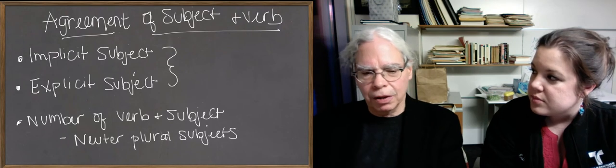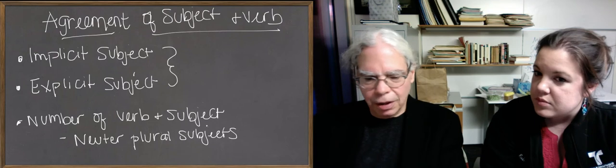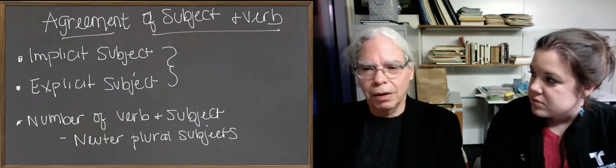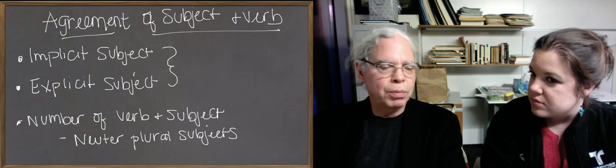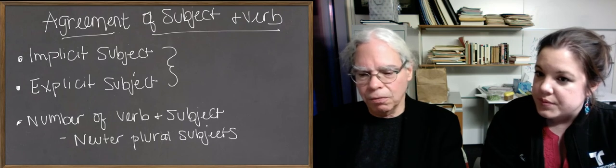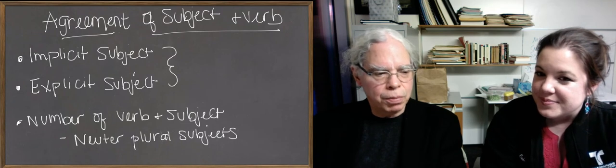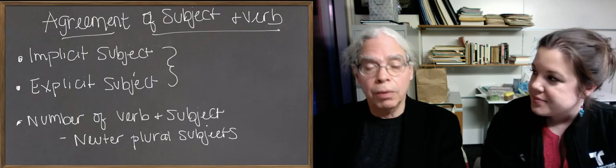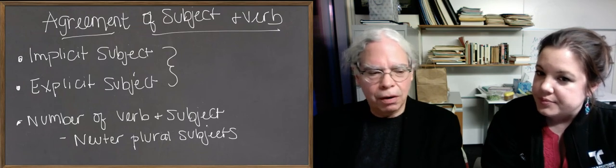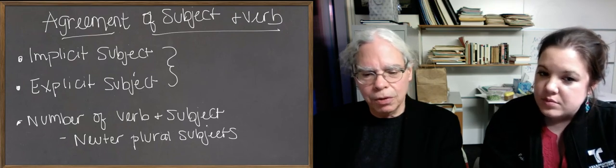When we have an explicit subject like the king or elephants or anything you can imagine, then most of the time, not always, but pretty much every single time, the verb is going to be third person. So you say the king eats or elephants rumble through the jungle. Then the verb in Greek has to correspond to the number of that subject has to be singular. If the subject is singular, like the king or elephants, it's going to be plural. So that's pretty straightforward too.